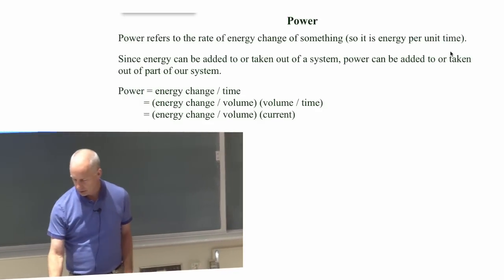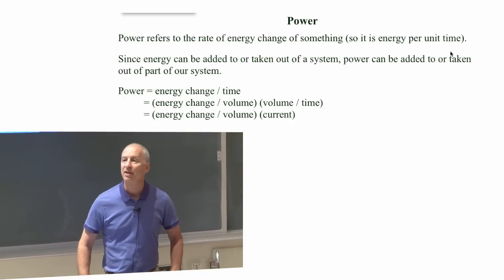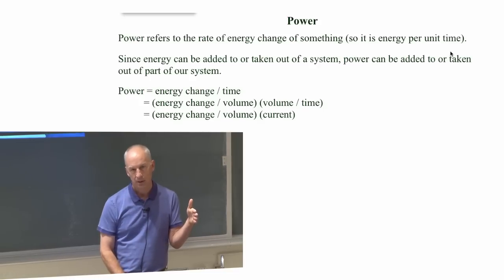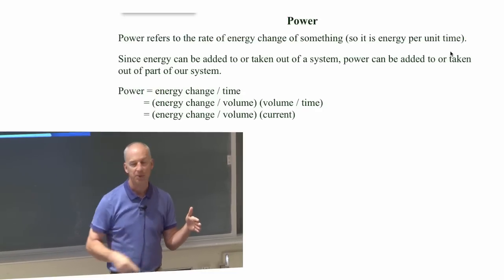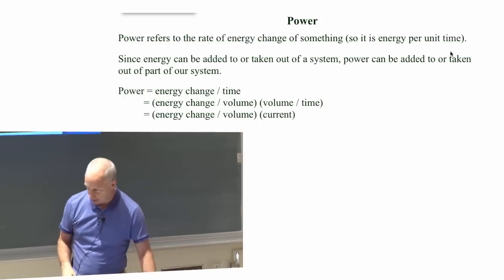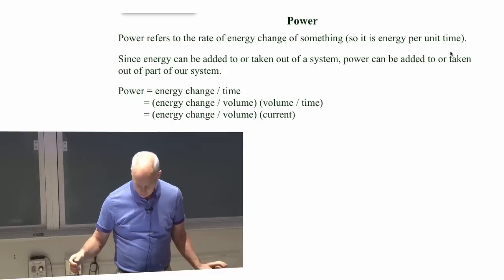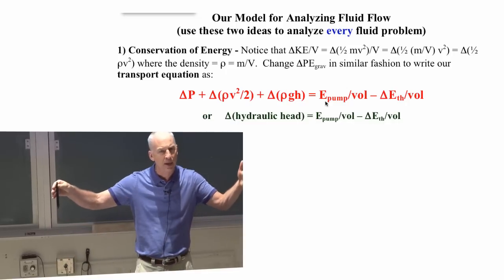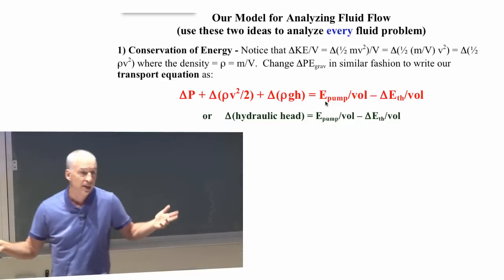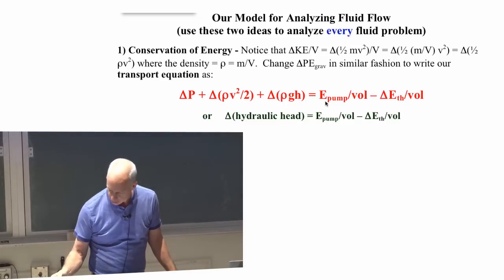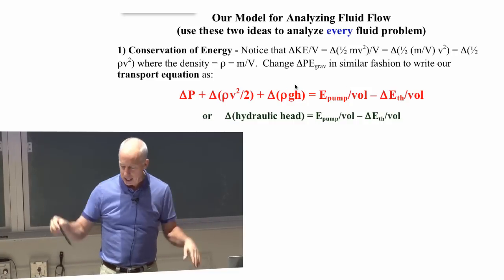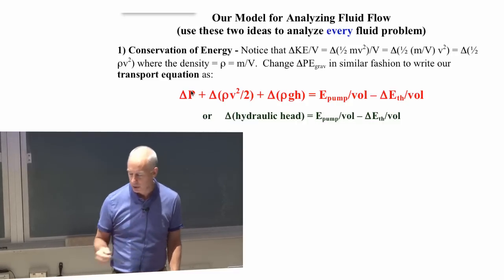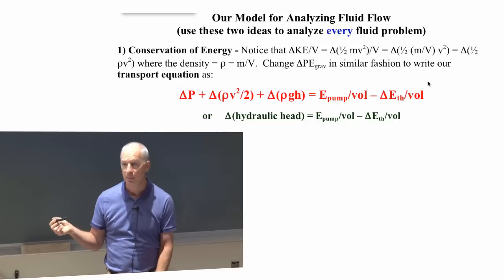The resistance can be taking energy out. In the setup you have in discussion lab, you have a horizontal copper pipe and water flows through it. What you find is that the pressure drops as the water flows through. The reason the pressure is dropping—well, there's no pump along that horizontal pipe, no change in height, and no change in speed because there's no change in cross section. So the reason the pressure drops is because the thermal energy is going up due to resistance.